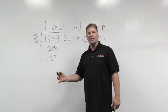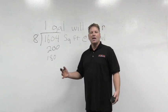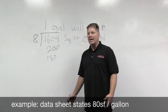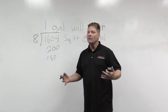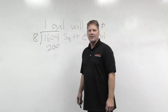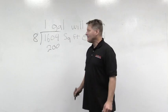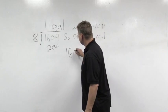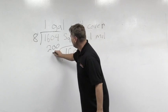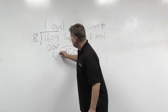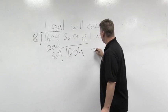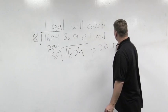Conversely, if the data sheet says the material is 80 square feet a gallon, and I want to know how many mils it's going to be so I can check it with a wet film gauge — to find this out, we take 1,604 and divide it by this adjusted coverage rate per square feet, and we come out to about 20 mils.